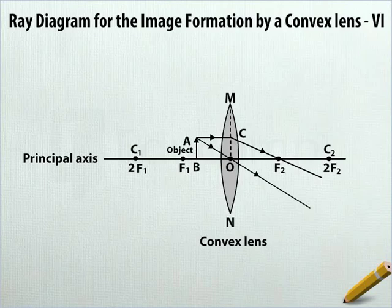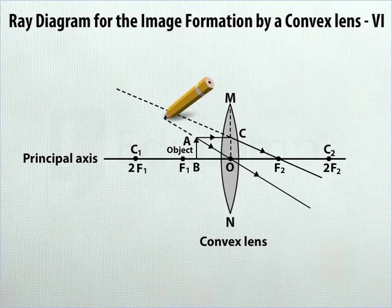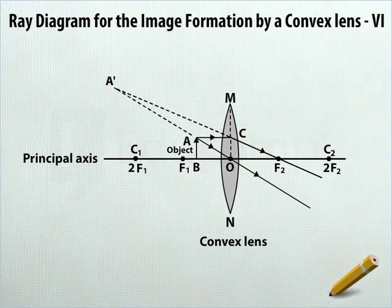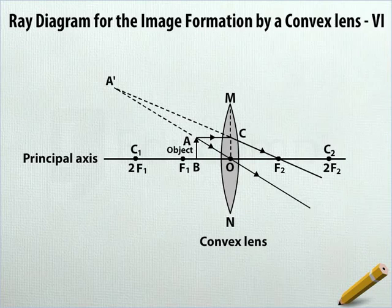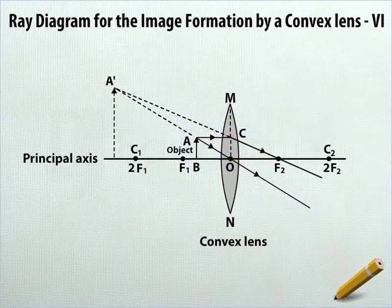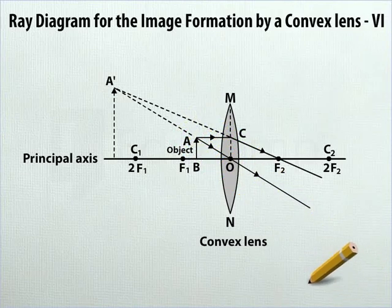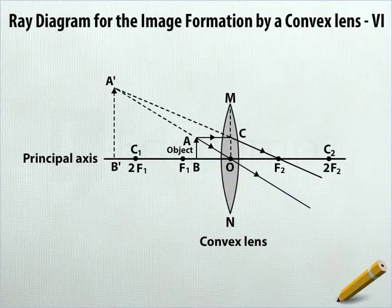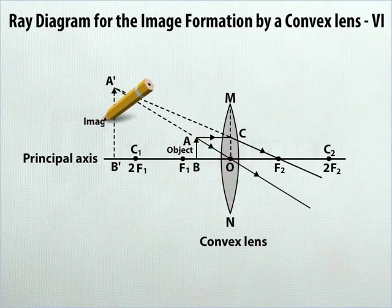Extend AO and CF2 backwards by dotted lines to meet at a point. Mark this point A prime in uppercase. From the principal axis up to point A prime, draw a dotted vertical arrow pointing upwards. Mark the foot of the arrow on the principal axis B prime in uppercase. Label B prime A prime as image and you are done.